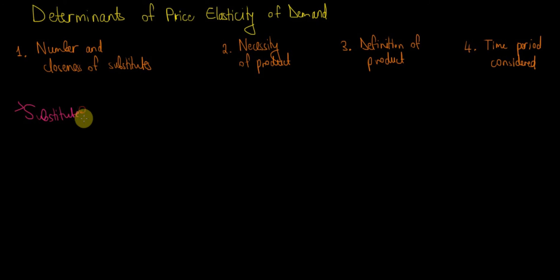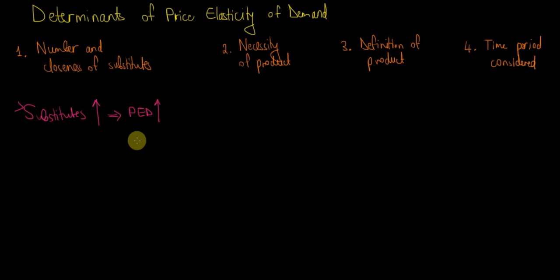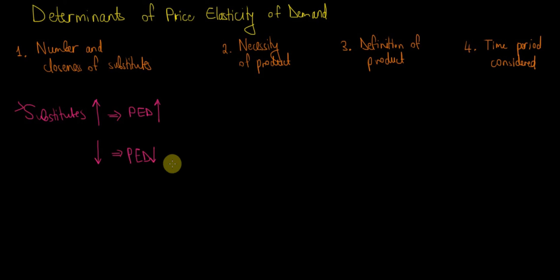Because you have many substitutes for apples and consider other fruits similar in taste, you will have an elastic demand for apples — meaning you are very reactive to price changes. As a summary: the more substitutes available, the higher the price elasticity of demand. Conversely, fewer substitutes means lower price elasticity, and demand becomes inelastic since there are no alternatives.